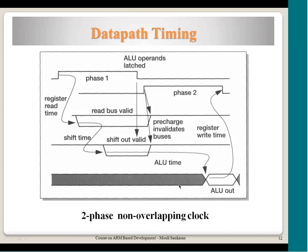A lot of operations happen in a single cycle. What does a single cycle mean? The M clock — when it starts and ends — is not a simple up/down signal. In ARM it works in a very innovative way using two signals offset by a small time gap that do not overlap. These two non-overlapping signals together correspond to one M clock cycle.